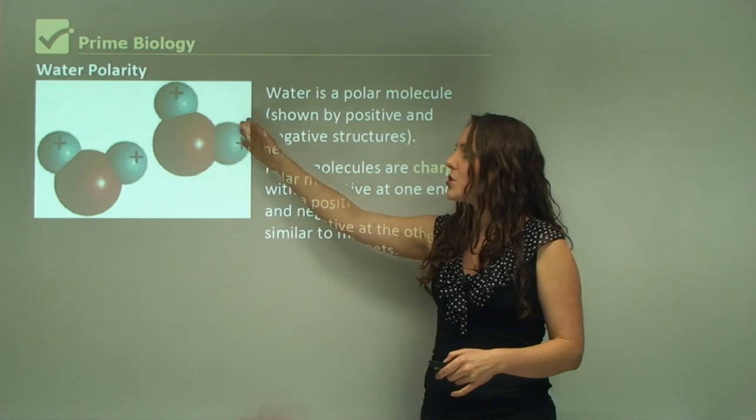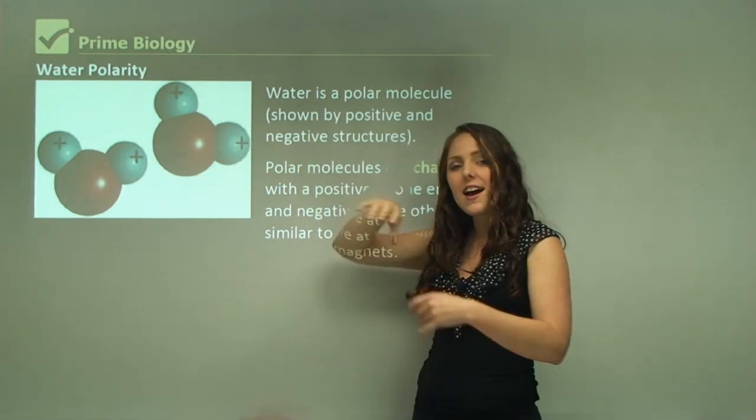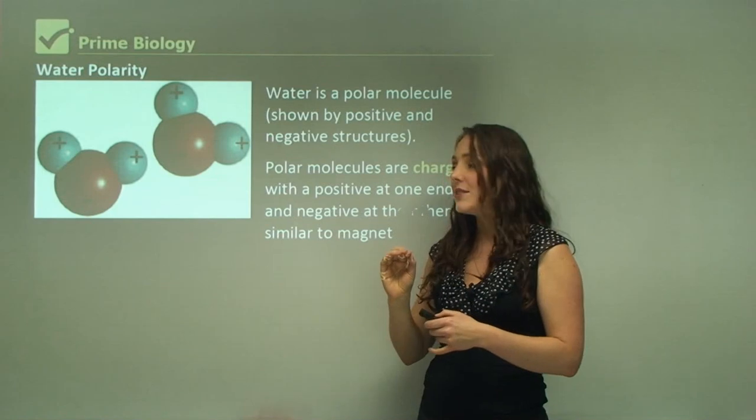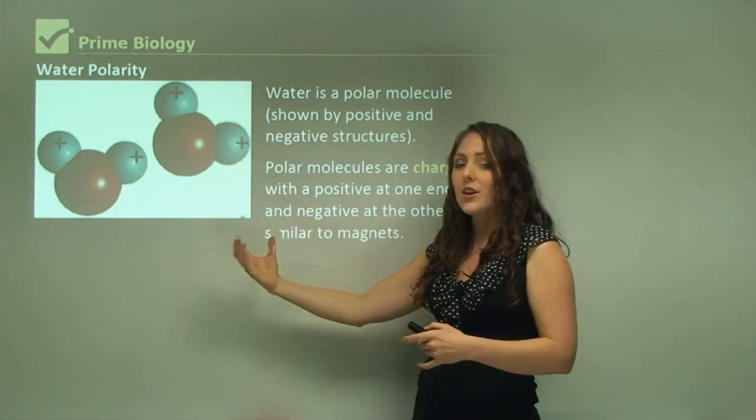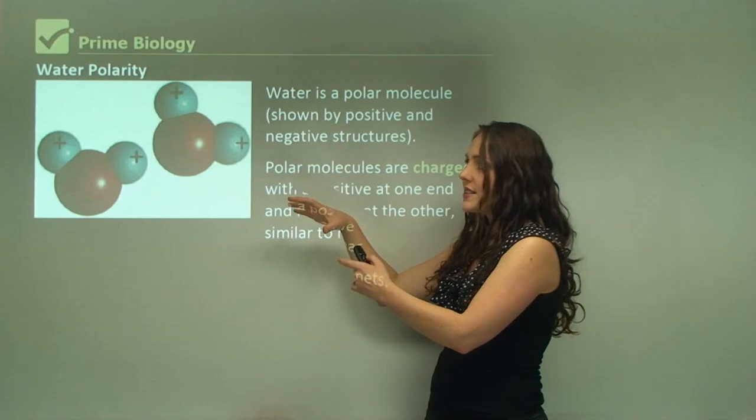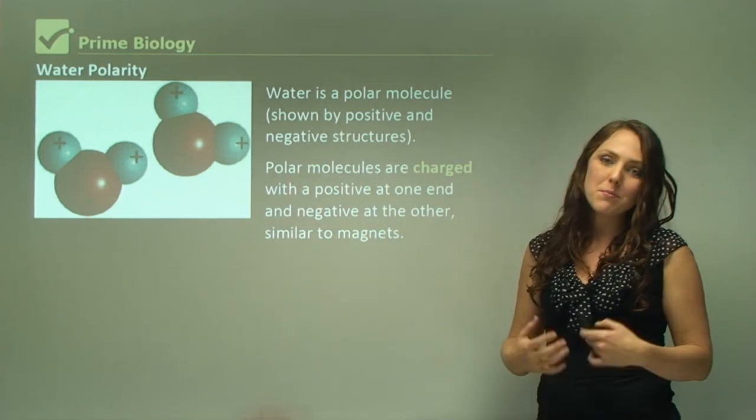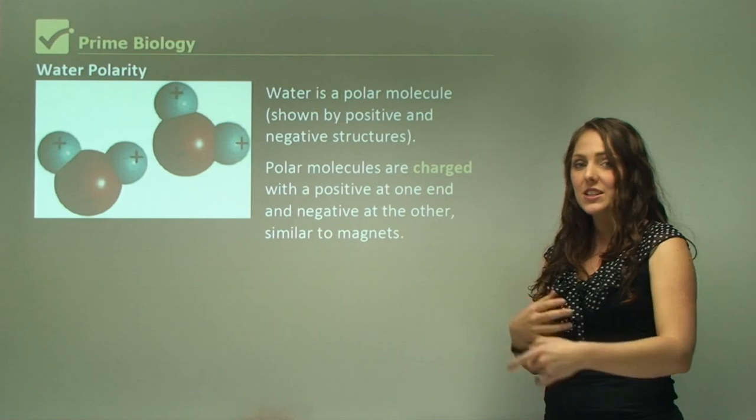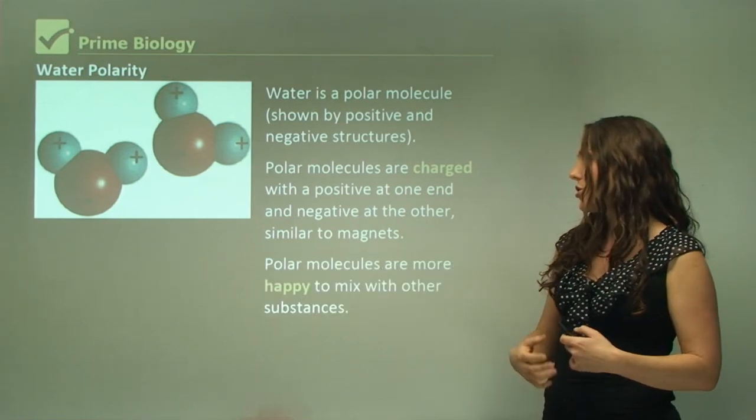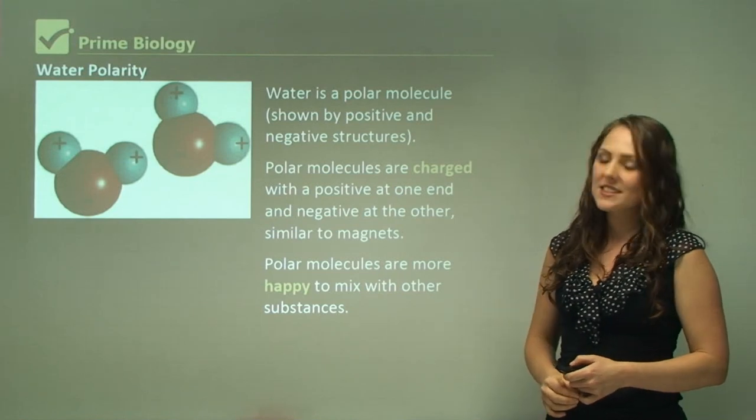Here we have a water molecule again. The red is the oxygen and the blue circles here are hydrogens. The hydrogen ions attached actually have a slightly positive charge and the oxygen has a slightly negative charge. For that reason there's two different ends, and because they're polar it means that they're more readily able to react with substances to dissolve. Polar molecules are more happy to mix with other substances.